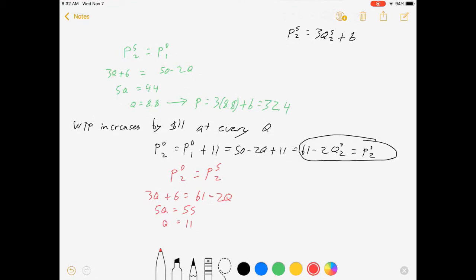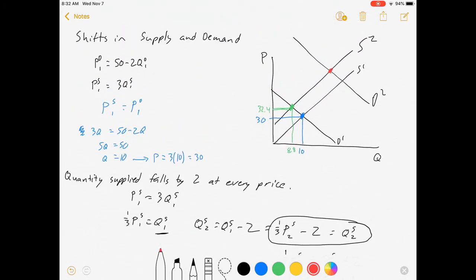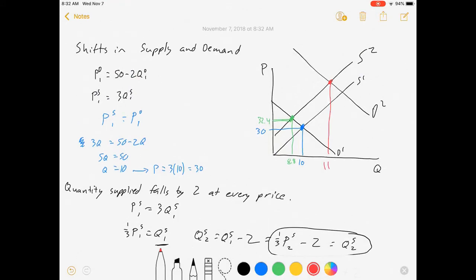And let's solve for the price that goes with it. I can substitute this into either curve. P equals 3 times q plus 6 equals 39. So this thing is definitely not to scale. That's okay.